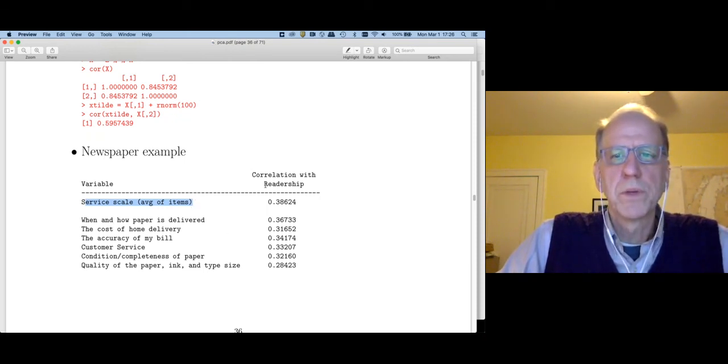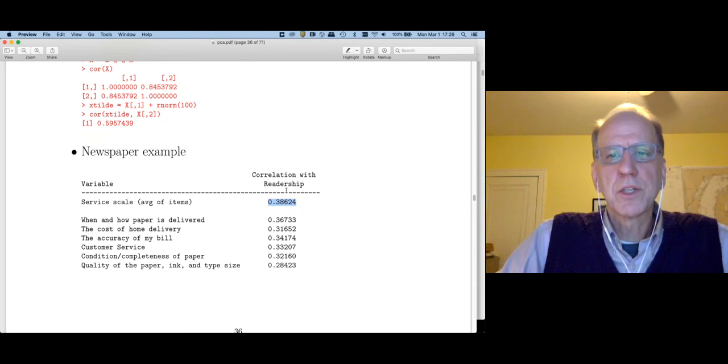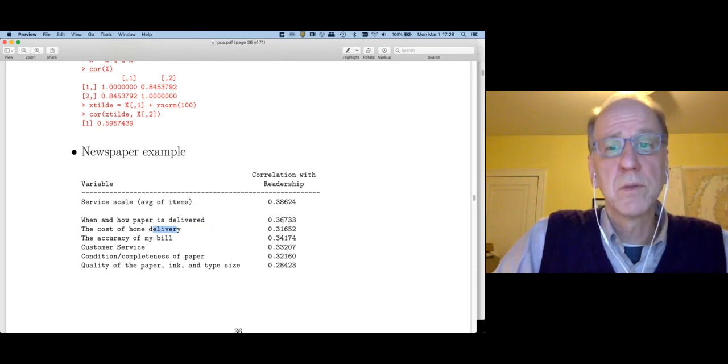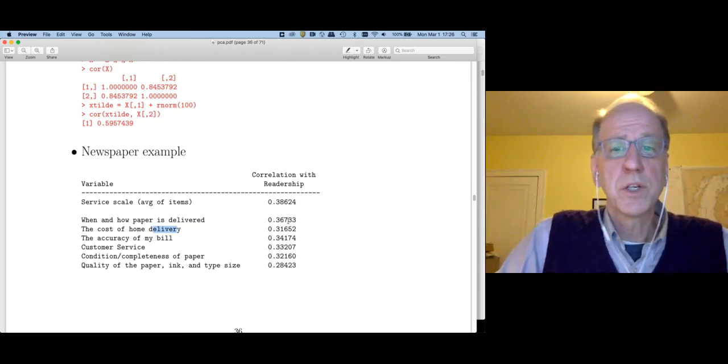So let me give you a specific example of this. I correlated a service scale, which is composed of these six items, with the readership of the paper. And I got a certain correlation. Notice this correlation is greater than the correlation between readership and any single item. So those would be like, this is like an x measured with noise. This is a separate x measured with noise. And this is consistent with the attenuation bias.